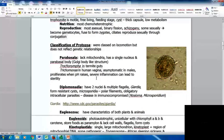Parabasalia lack mitochondria. They have a single nucleus and a parabasal body that's a Golgi body-like structure. An example is Trichonympha that lives in termite guts and allows them to digest wood. Trichomonas lives in the human vagina, is asymptomatic in females but can proliferate when pH rises. Severe inflammation can lead to sterility.